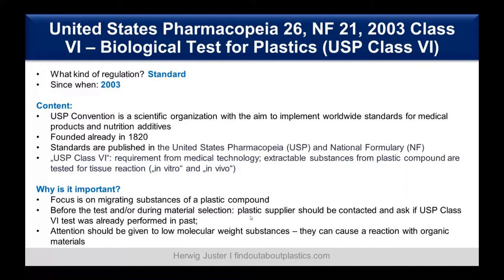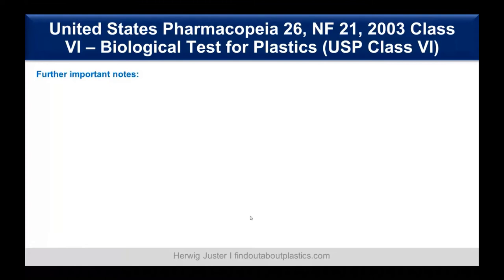It is recommended, before starting testing or during material selection, to already reach out to the plastic material supplier and check if USP Class VI tests were already performed in the past — this can save time and lots of money. Attention should be given to low molecular weight substances, because they are more likely to cause a reaction with organic materials.